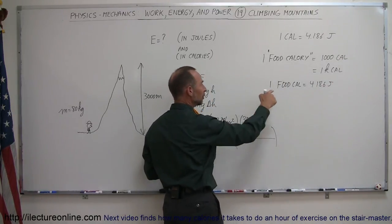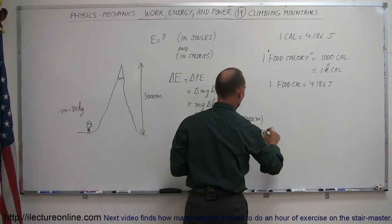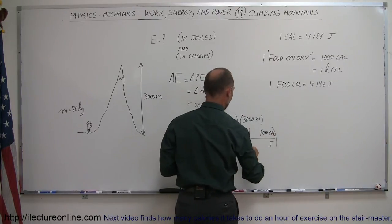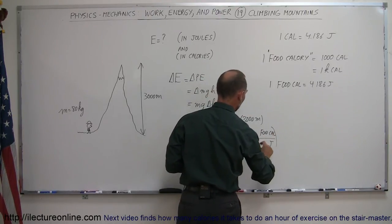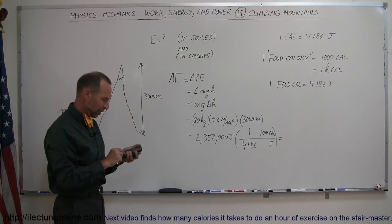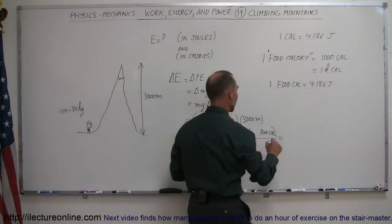So instead of joules, we want food calories. So we want joules at the bottom. We want food calorie at the top. And so we know that 1 food calorie is 4,186 joules. All right, if we take that number and divide by 4,186, we get 562 food calories.